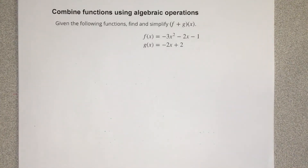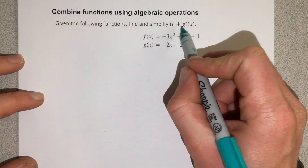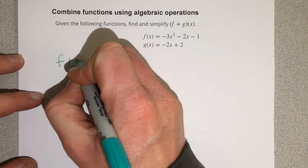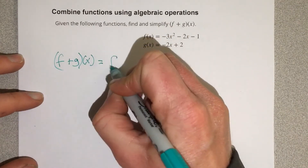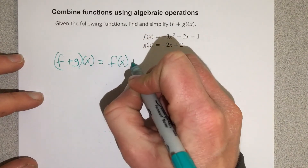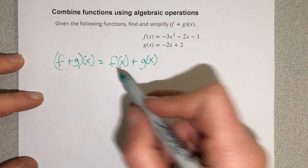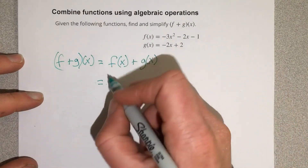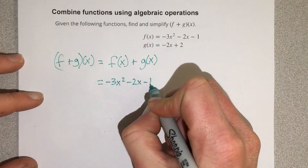In this video, we're going to combine functions using algebraic operations. The operation we're going to use here is the addition operation. We're taking f plus g of x, and the first thing I'm going to do is write what f plus g of x means — that really just means we have f of x plus g of x. The two functions are being added together. I like to write that first, then go through and substitute in the f function, which is negative 3x squared minus 2x minus 1.